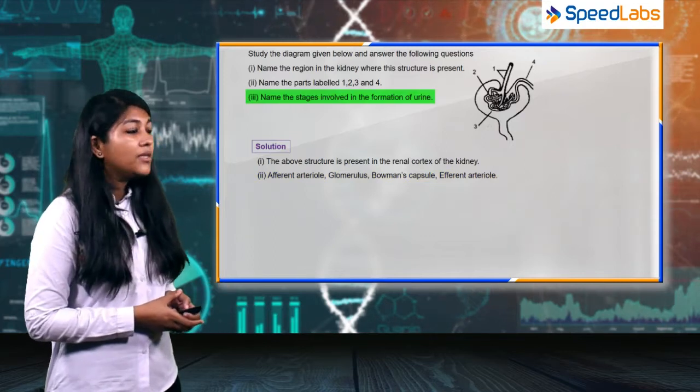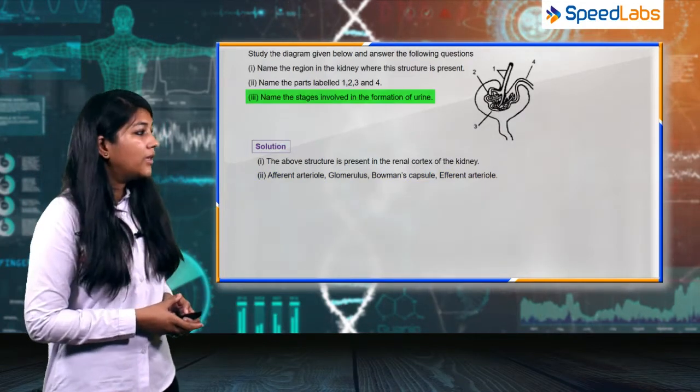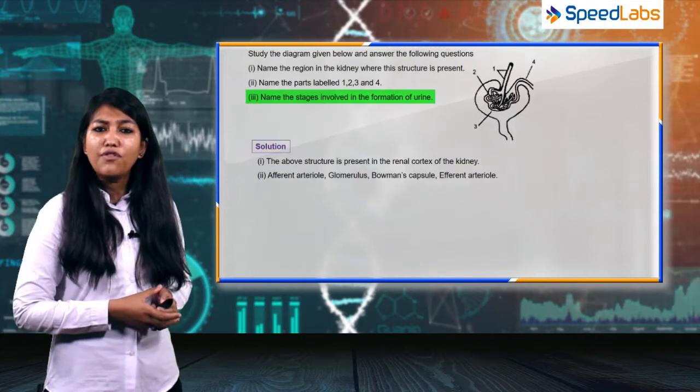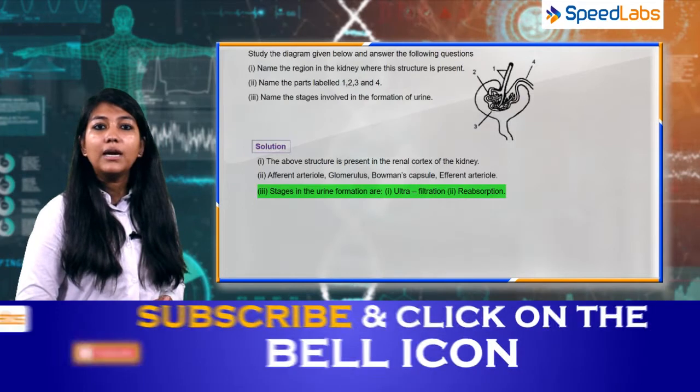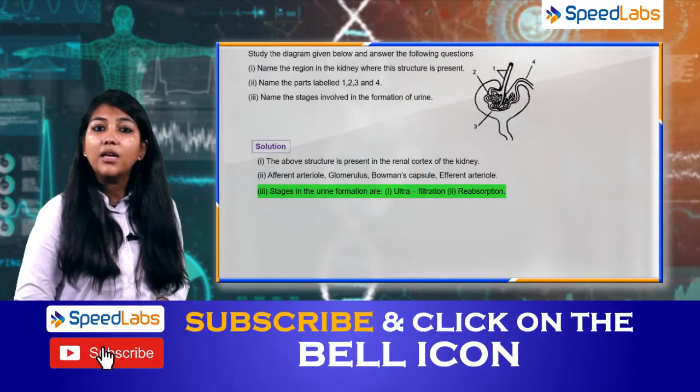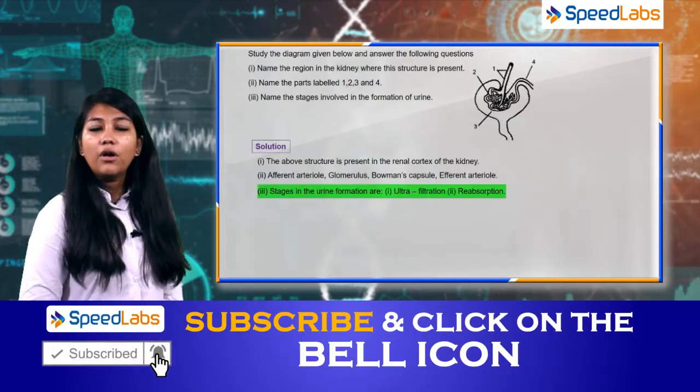Moving on to the third part: name the stages involved in the formation of urine. This is straightforward. The answer is ultrafiltration and reabsorption.